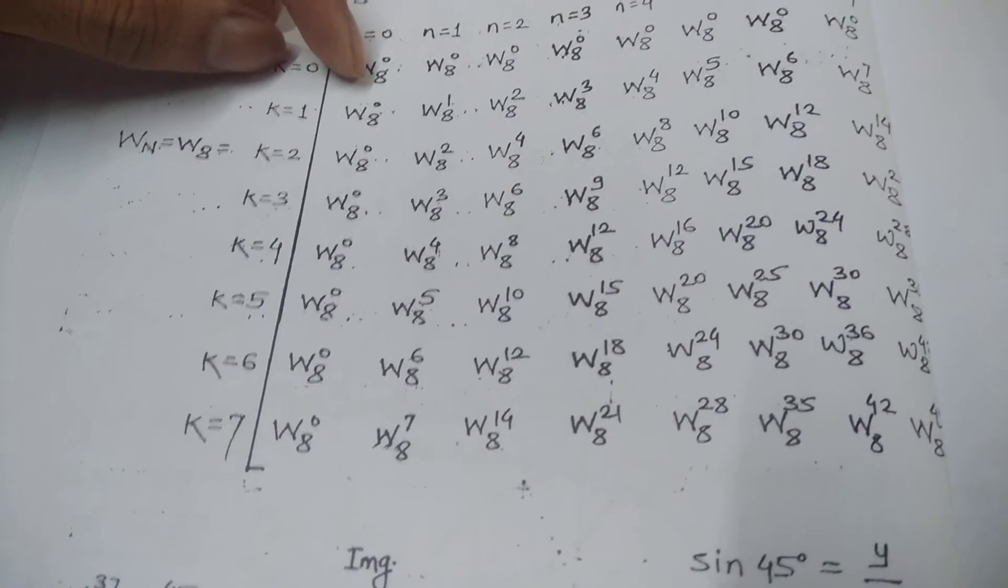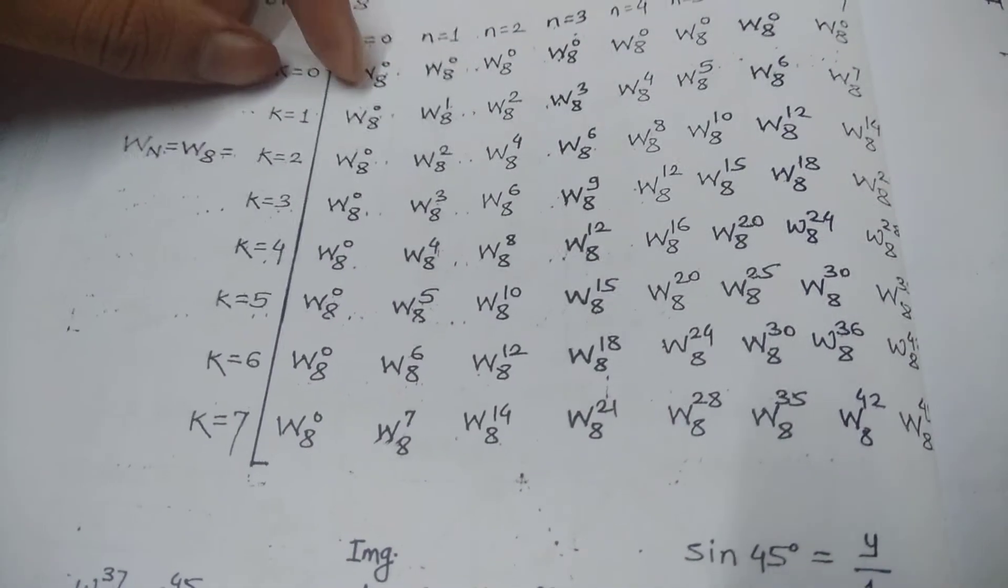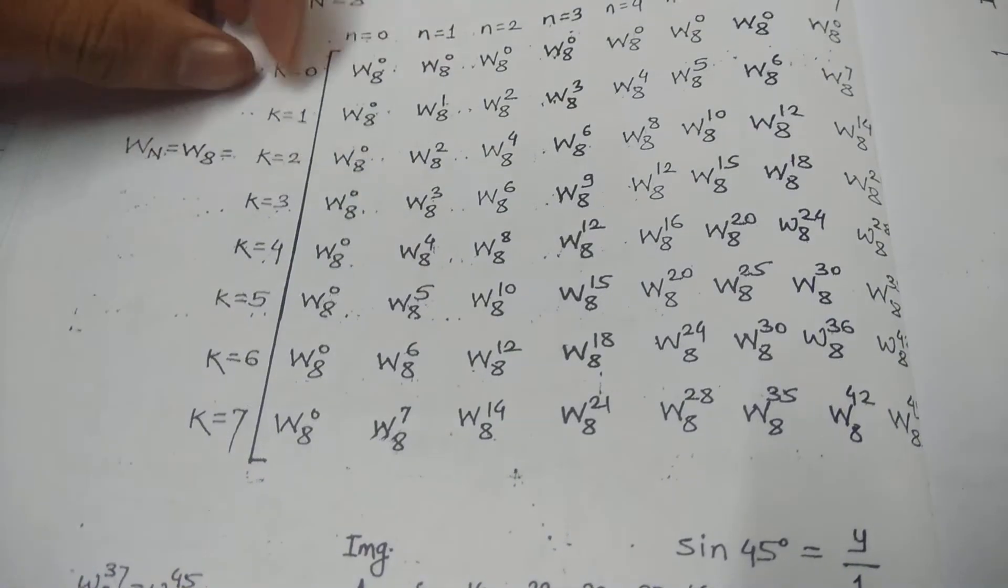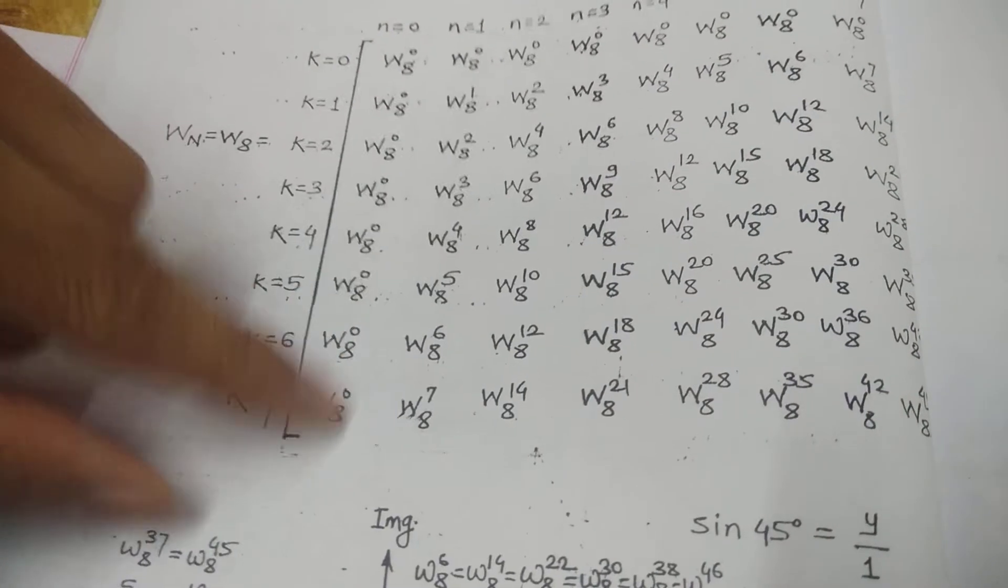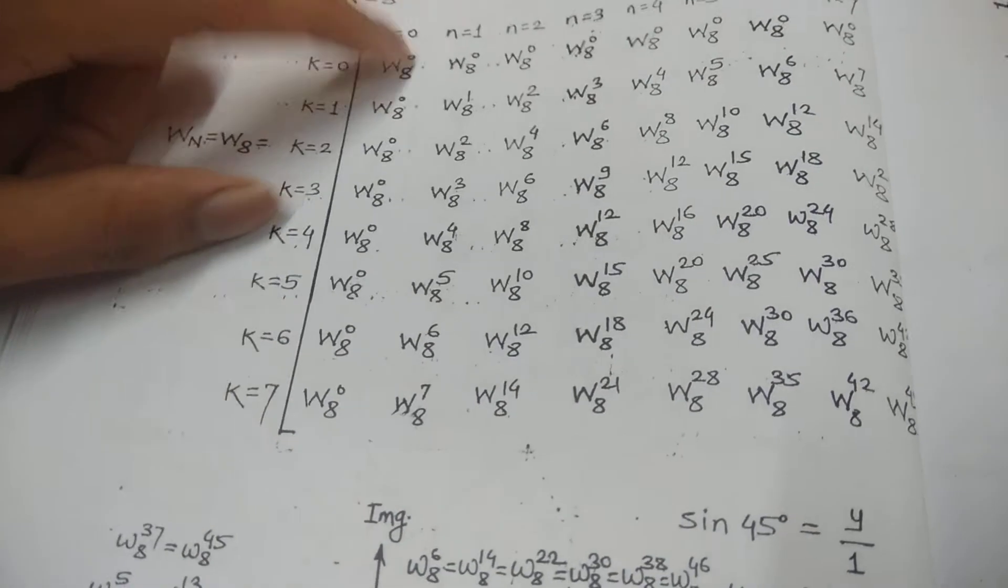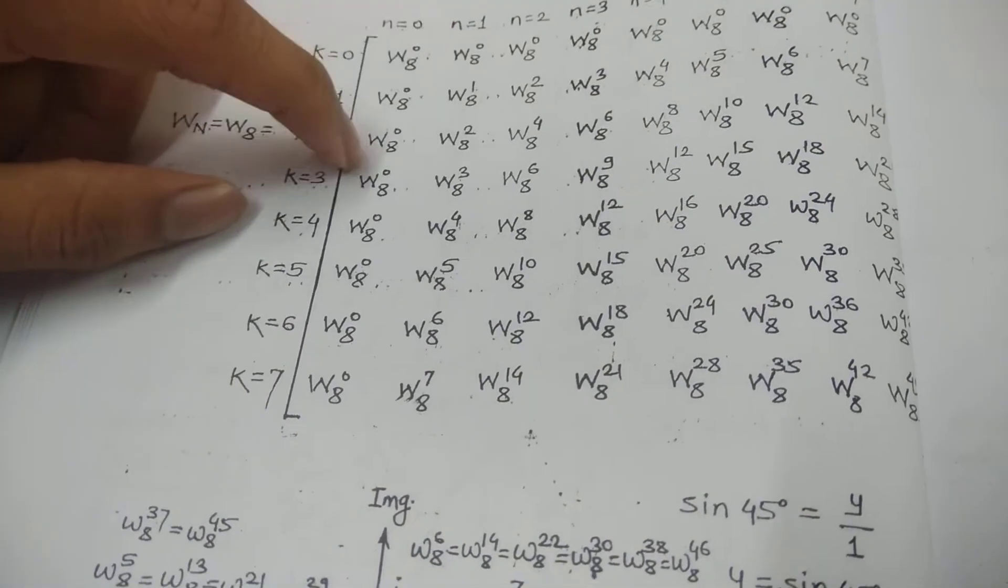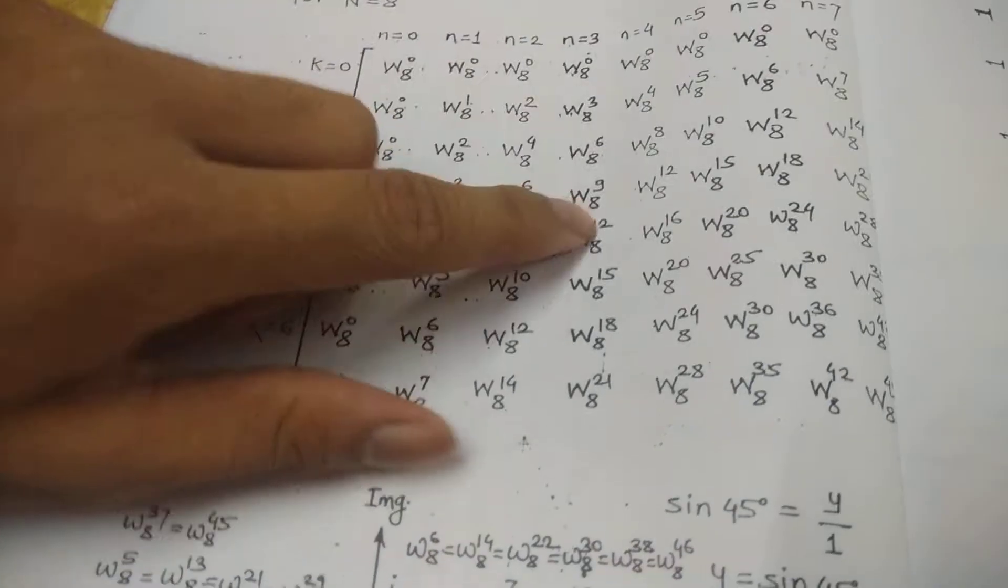W8 you will write as it is: W8 raised to 0, W8 raised to 0 because 0 into 1 whole will be 0. Just multiply this 1 and 0, this is 0, 2 and 0 is 0, so W8 raised to 0. Like this, if you multiply, you will have this particular matrix ready.